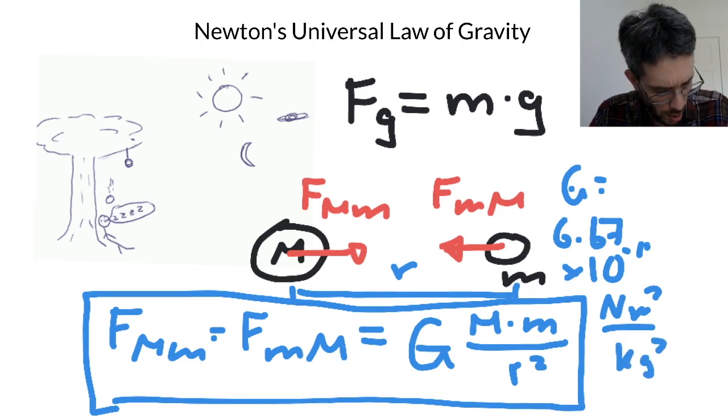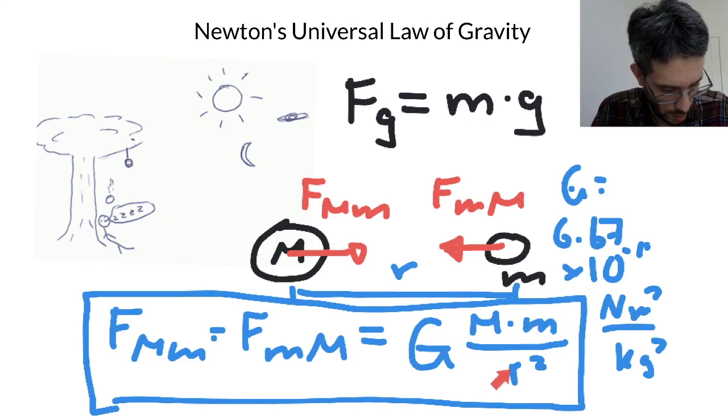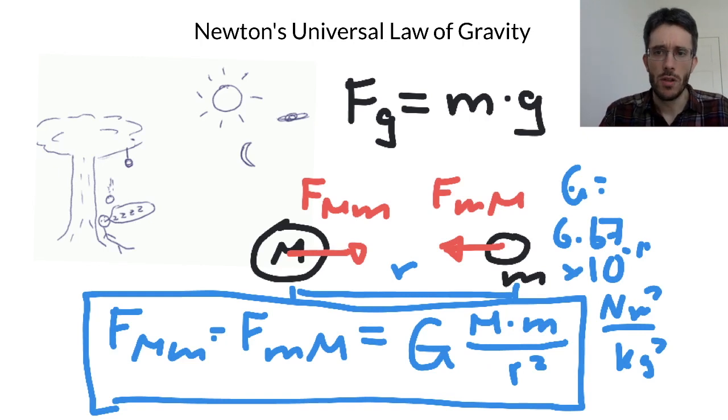If you look at the units here, we have kilograms once or twice. So we have two times the kilograms—one kilogram here, one kilogram here—divided by the square meter, and what we end up having is newtons.